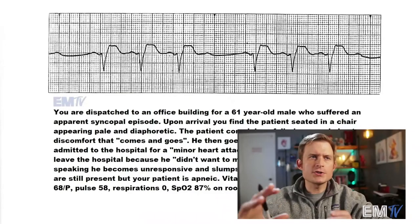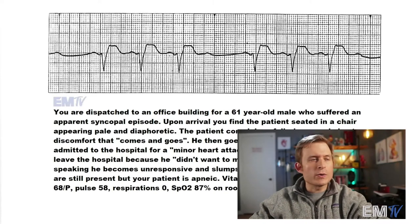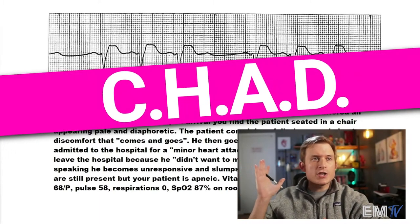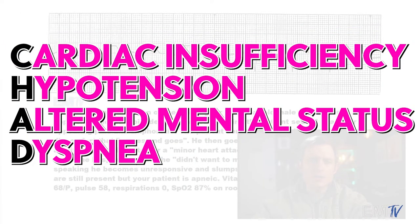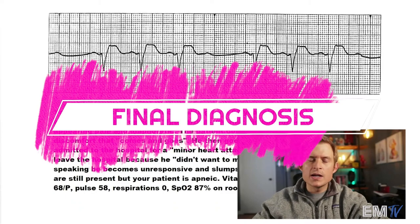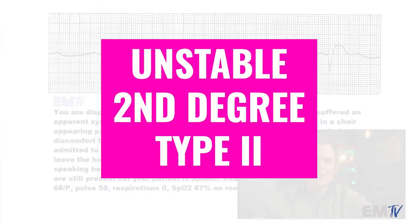As Static Cardiology relies on not only correct identification of the rhythm but also correct treatment, we need to choose what algorithm in ACLS we're going to follow — the stable or the unstable algorithm. For unstable criteria, I use the acronym CHAD, which stands for cardiac insufficiency, hypotension, alteration of mental status, and dyspnea. Based on this patient's presenting condition as well as vital signs, my final diagnosis for static cardiology would be an unstable second-degree type 2.